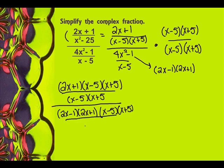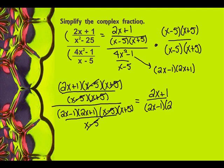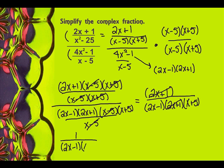And that's all over x minus 5. Now this is the fun stuff — this is where we get to cancel. x minus 5 over x minus 5 is 1. x plus 5 divided by x plus 5 is 1. So I end up with 2x plus 1 on the top. Now looking down here, these are the only things that cancel, so I'm going to end up with 2x minus 1 times 2x plus 1 times x plus 5. But the whole 2x plus 1 will cancel with that, so I end up with 1 over 2x minus 1 times x plus 5.